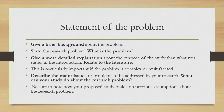This is particularly important if a problem is complex and multifaceted — you really need to back it up with literature. Whatever arguments or statements you make should be backed up with literature. You should describe the major issues or problems to be addressed by your research. What can your study do about the research problem? Once you state the problem, you need to also indicate what your study will do regarding that specific problem. Be sure to note how your proposed study builds on previous assumptions about the research problem.